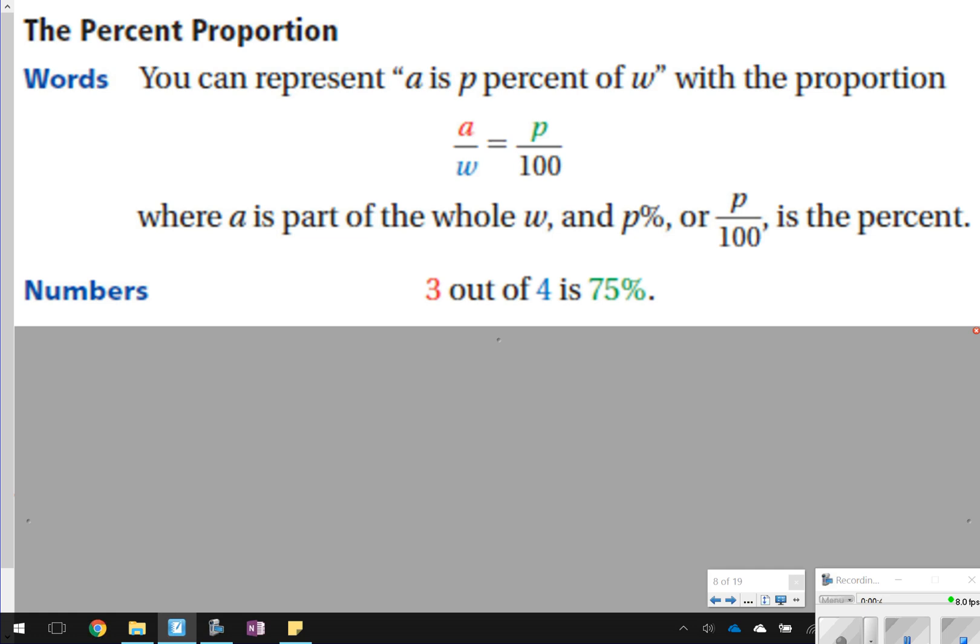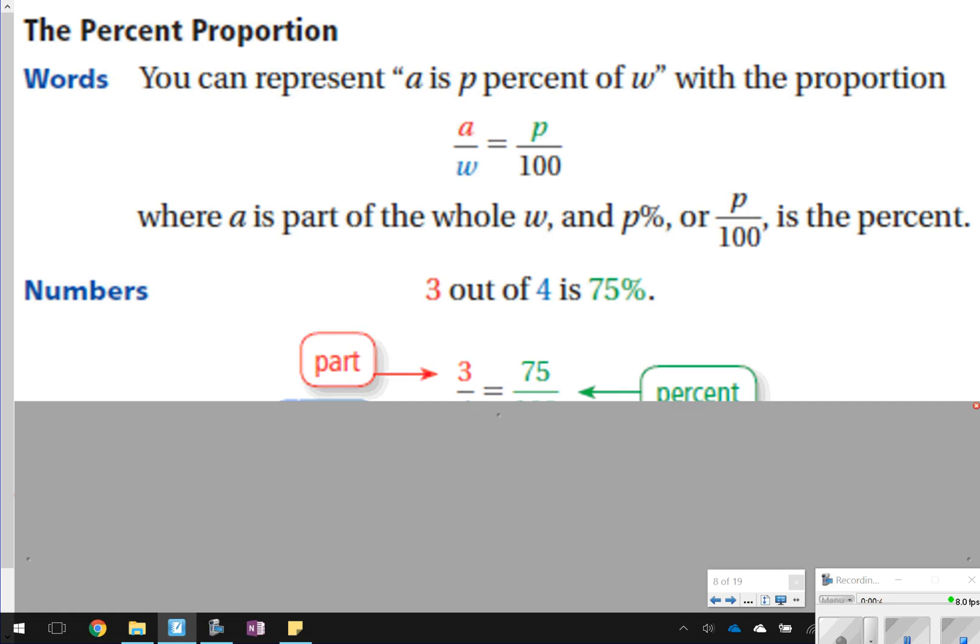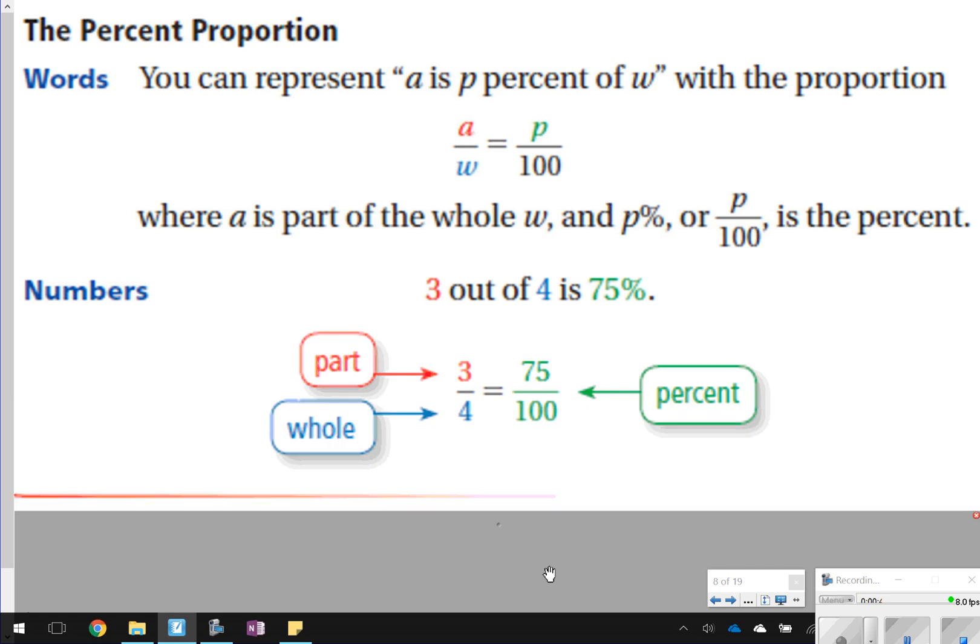So if you were going to try to write 3 out of 4 is 75%, you would write 3 over 4 is equal to 75 over 100, where 3 is the part, 4 is the whole, and 75 is the percent, so you'd write 75 over 100.